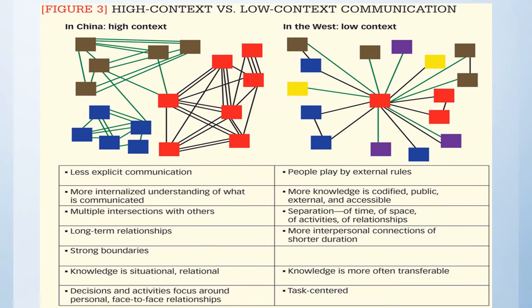Here's a visual for thinking about communication in high context versus low context cultures. The chart gives us China as an example of high context: less explicit, more internalized understanding of what is communicated, long-term relationships, really strong boundaries meaning those groups are very close-knit. Knowledge is situational and relational — what you know is based on who you know and the areas of society you have access to. Decisions and activities focus around personal face-to-face relationships, underpinning the idea that relationships within high context cultures are very long-term and those boundaries are very strong and stable.